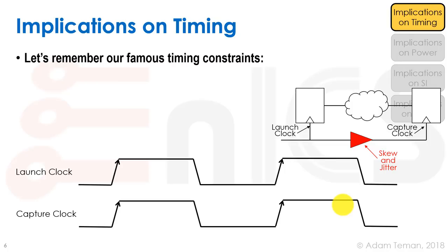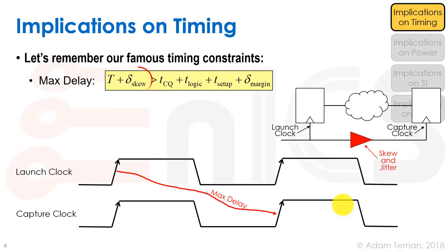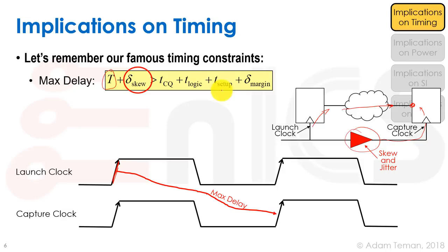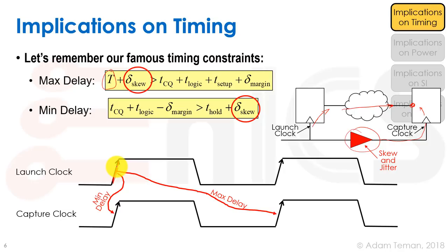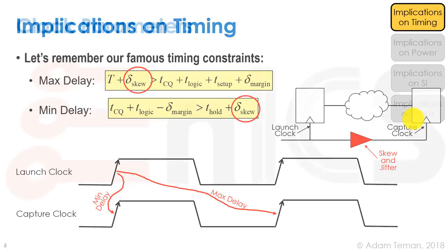Starting with timing, we remember our famous timing constraints. The max delay constraint takes our launch clock at the first flip-flop, goes through TCQ plus T_logic, and the arrival time at the endpoint must be shorter than the clock period plus skew and arrive at least setup time before the capture clock. The min delay constraint ensures we don't skip a clock cycle — TCQ plus T_logic must be longer than the delta skew plus the hold time constraint.